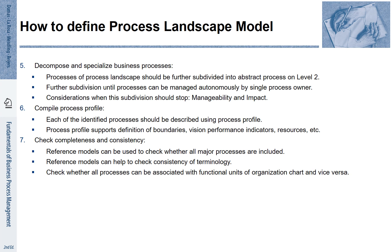When do we need to stop with subdivision? This very much depends on manageability and impact. There is no clear-cut rule, but it is good practice not to go too detailed. For example, SAP centrally manages their process architecture from level 1 to level 3. For each of the identified processes, we have to compile a process profile, which describes the characteristics of these processes in more detail. Finally, we check for completeness and consistency — reference models can be of good help here.